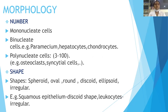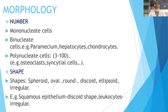Morphology: according to number, cells can be categorized as mononucleate and binucleate. Examples of binucleate cells are paramecium, hepatocytes, and cardiocytes. For polynucleate cells, containing 3 to 100 nuclei, examples include osteoclasts and sertoli cells.